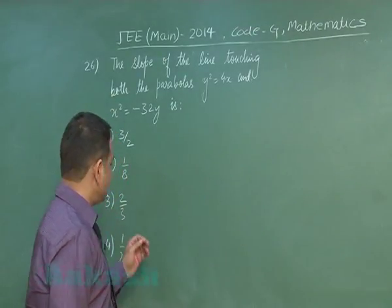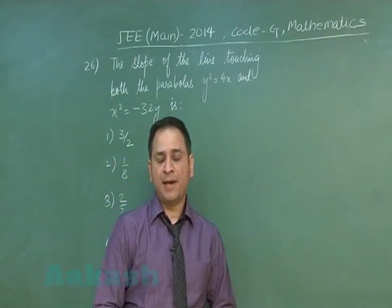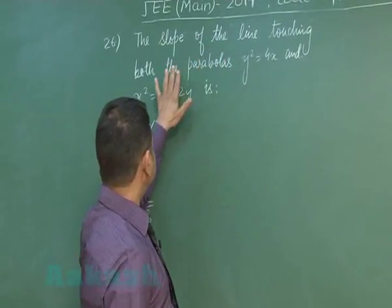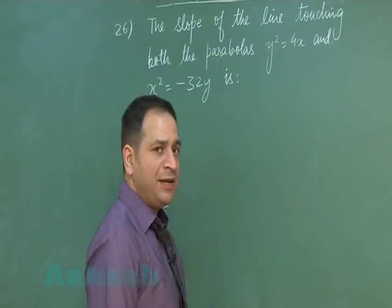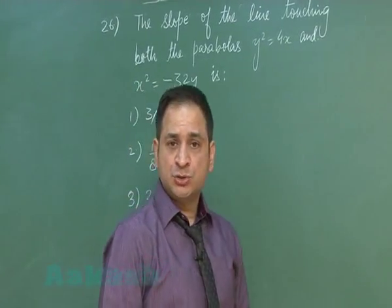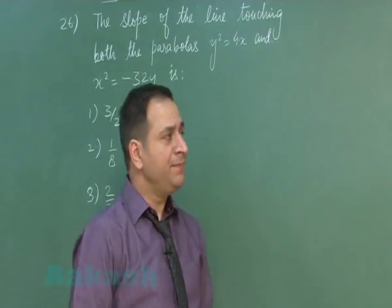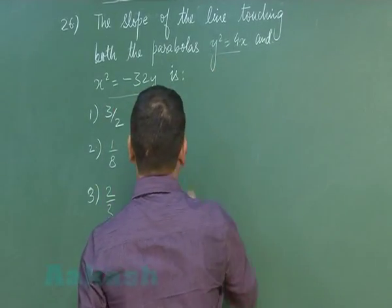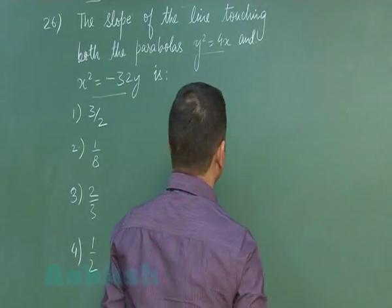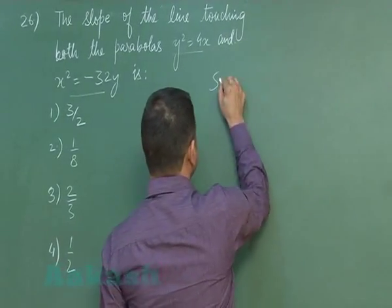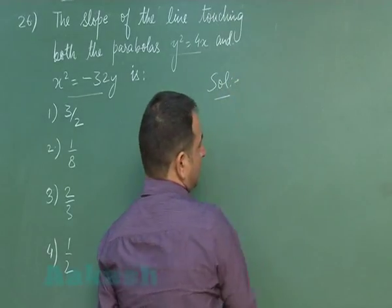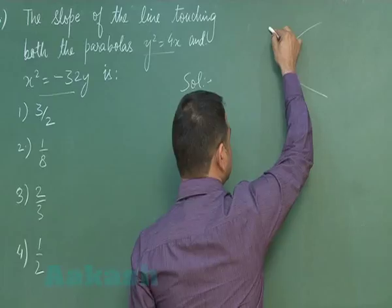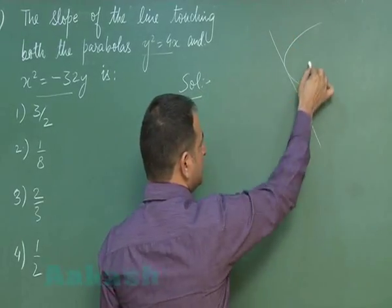Moving to problem number 26, which is from parabola. It is given the slope of the line touching both the parabolas — a problem related to common tangent to both parabolas. One parabola is y² = 4x and another is x² = -32y. There is a line which is common to both the parabolas, that is a tangent to both.